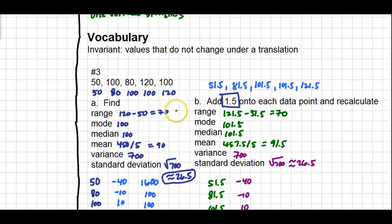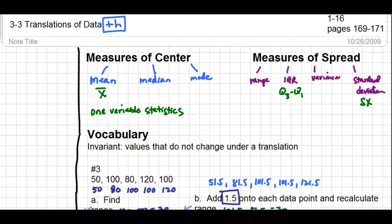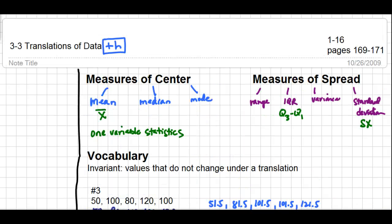So now let's analyze our results. Notice that the range, the variance, and the standard deviation were all the same between the two sets, even though we changed the data. The range, variance, and standard deviation remained unchanged. Let's go ahead and make a note of that: the range, variance, and standard deviation are all measures of spread. So when you add a number onto data, the measures of spread will continue to be invariant - they will not be changed.